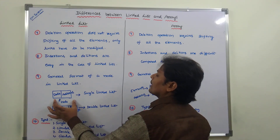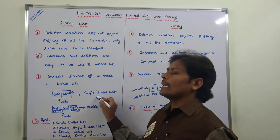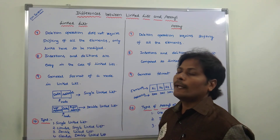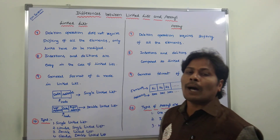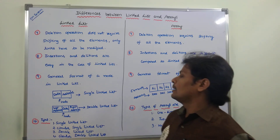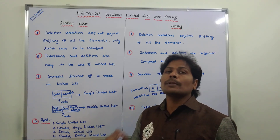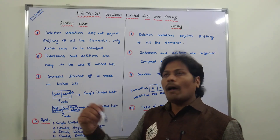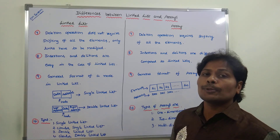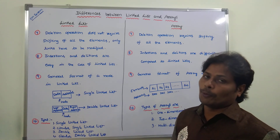The general format of a single linked list: in a single linked list, every node contains two parts. The first part is the data part, which contains the integer element. The second part is the address part, which points to the address of the next node in the list.